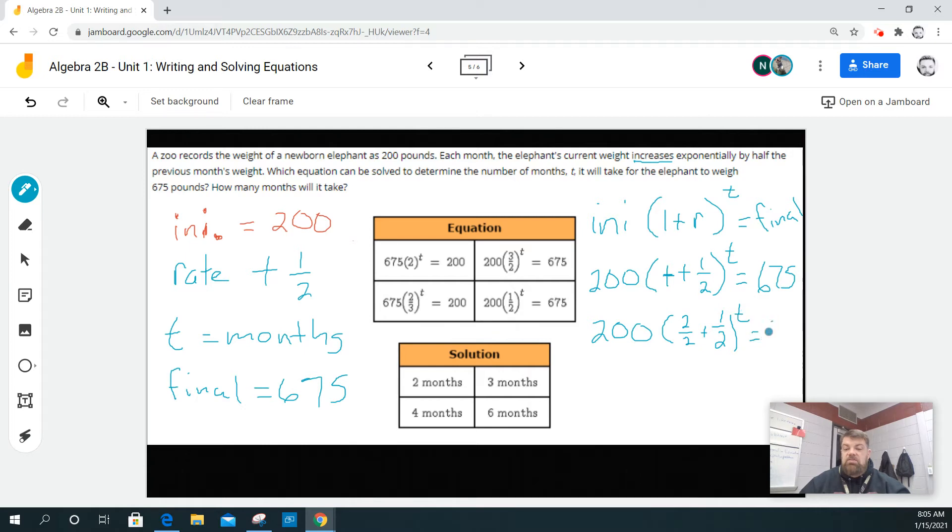T is equal to 675, right? Well, what's two over two plus one over two? Well, that would be three over two. So then I've got to pick the equation. So that looks like this equation right here, right? This one right here. And then we've got to solve to find out how many months that would be.